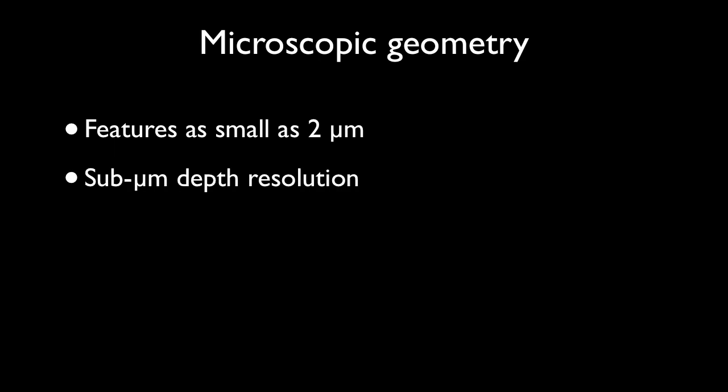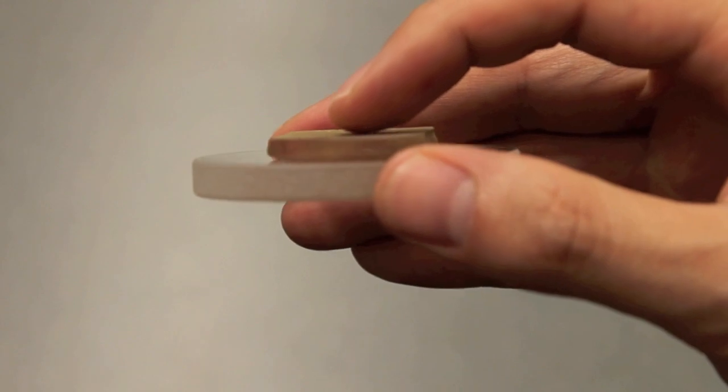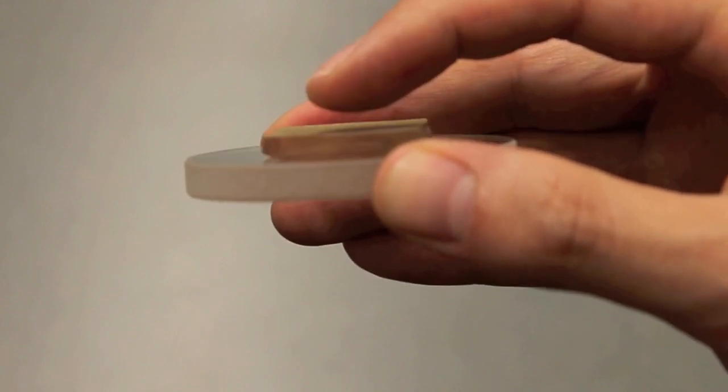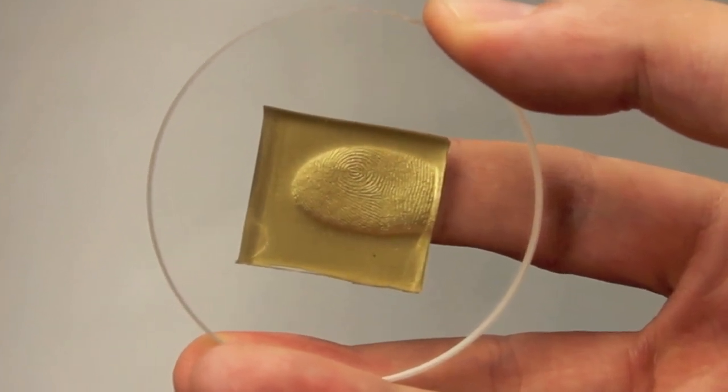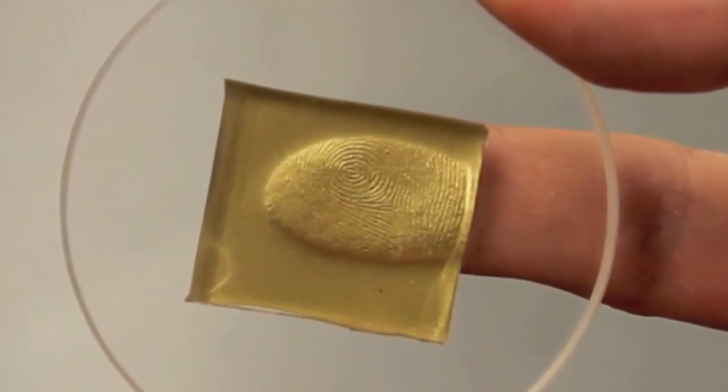We can resolve features as small as 2 microns with submicron depth resolution. The Gelsite sensor is a clear elastomer with a thin layer of paint. The paint closely conforms to any object that presses against the sensor, altering the reflectance properties of the object.